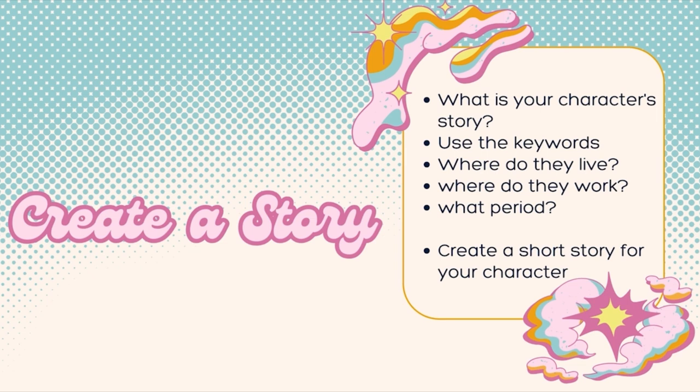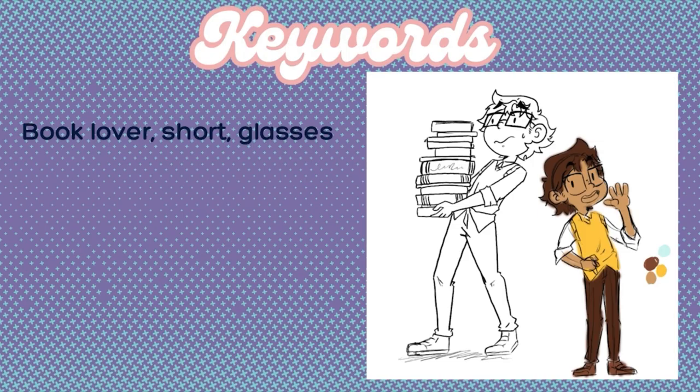Of course, you would have to create a story for your character. What backstory would you like to give? What type of journey would they face? Are they the hero of the story or the villain? You have the power to do that. For a good sense of your character, you can create keywords to help you understand what you want. For example, I use these three keywords: book lover, short, and glasses. That character is just a simple design — a nerd character who works in a library. The character's body type is a rectangle. As you can see from our next slide, we'll be talking more about shape language.